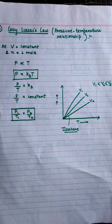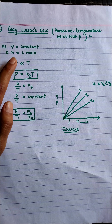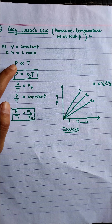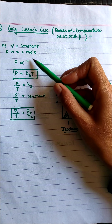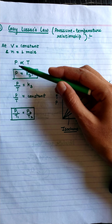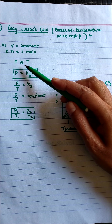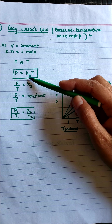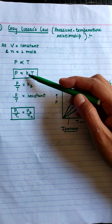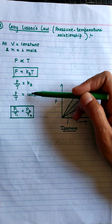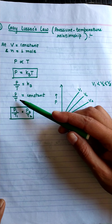According to Gay-Lussac's law, when the volume is constant and at a constant number of moles, the pressure of a gas is directly proportional to the temperature. On increasing temperature, the pressure of gas will also increase. On removing the sign of proportionality we get a constant k3, so P = k3·T, which means P/T = k3, a constant.